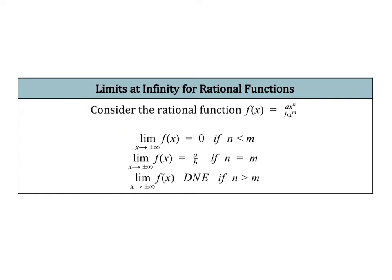Here you can see that a is the coefficient of the largest degree term of our numerator, n is that degree. b is the coefficient of the term with the largest degree in our denominator, and m is that degree.